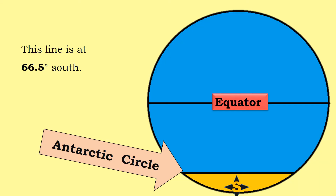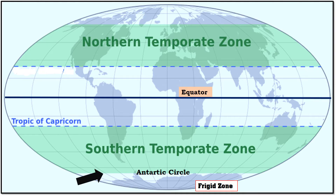South of the equator, near the South Pole, we can find the Antarctic Circle. It circles the Earth at 66.5 degrees south. This line separates the South Temperate Zone from the South Frigid Zone.